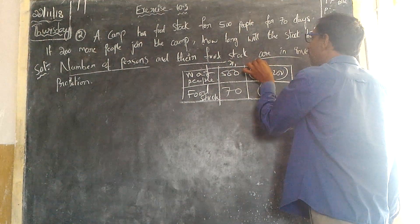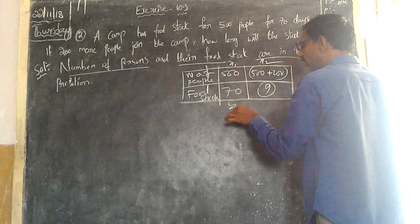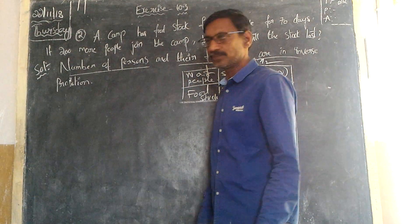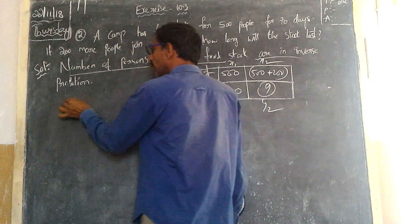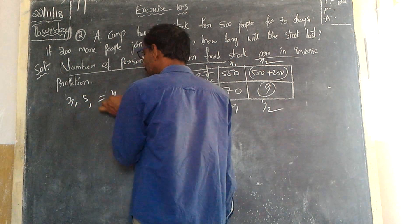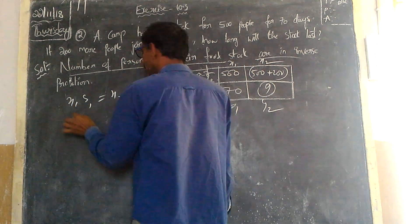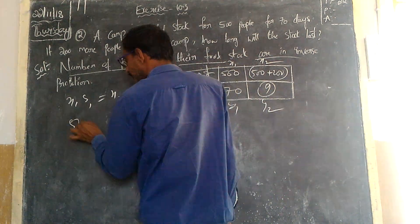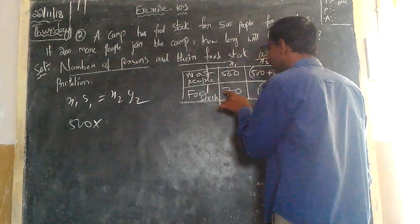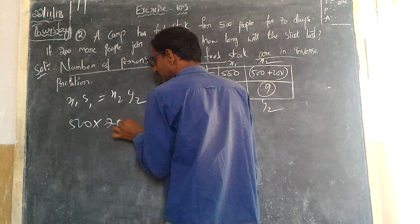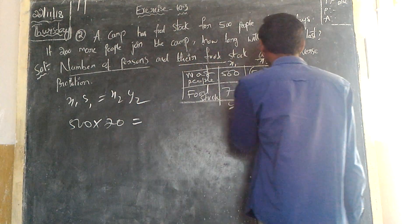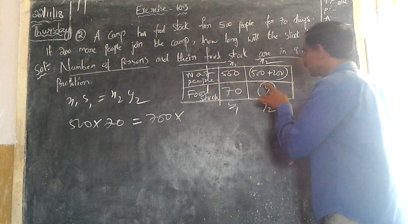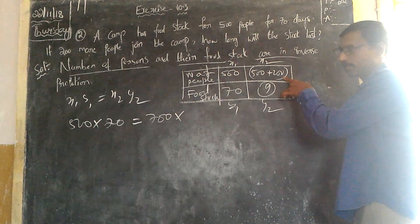So, this is Y1 and Y2. But the numbers for the course: X1·Y1 equals X2·Y2. So X1 and Y1. Who does that intro go from to 70 days? X2 is 700 — that is 500 plus 200, 700 equal.